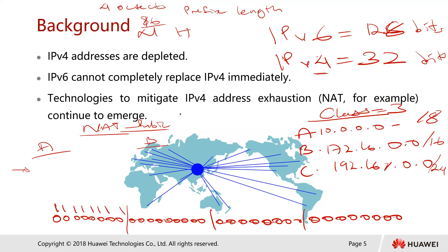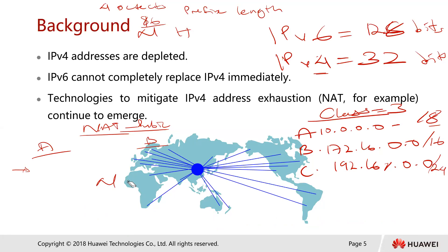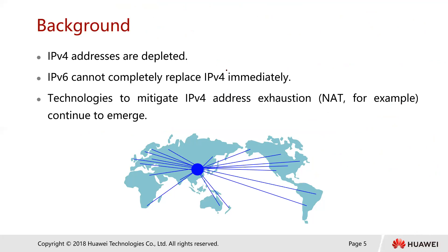For Class A, the first eight bits are turned on, which is why we annotate it with /8 — it represents the network bits. Private addresses are used on private networks, whereas public addresses are used on public networks. For your device to communicate, it must either have a public IP address, or its private address must be translated into a public IP address. To allow communications between private and public addresses, we must use some kind of network address translation.